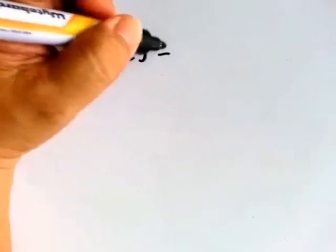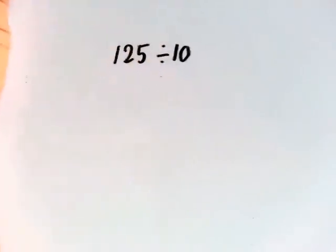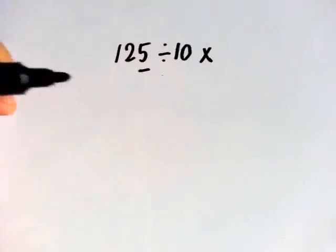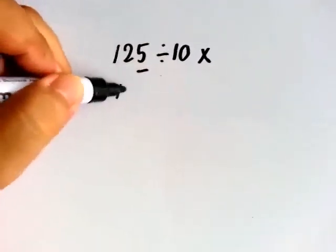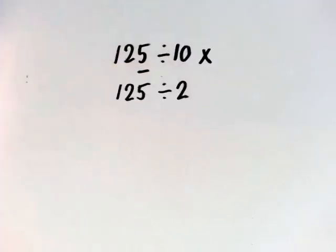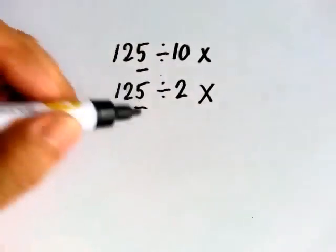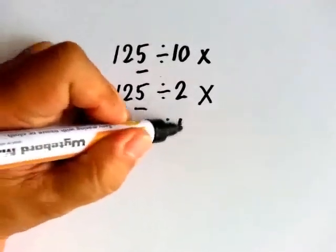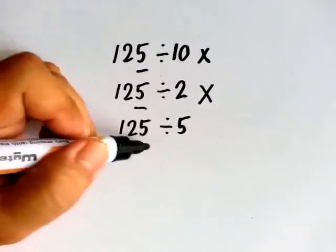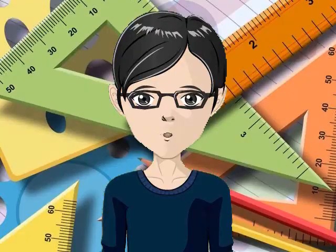What about 125? Is this divisible by 2, 5, and 10? 125 is not divisible by 10 because it does not end in 0. 125 is also not divisible by 2 because it is not an even number. But 125 is divisible by 5 because it ends in 5. If you don't remember the rules, that's okay — you just divide.